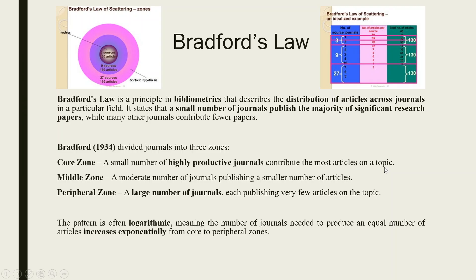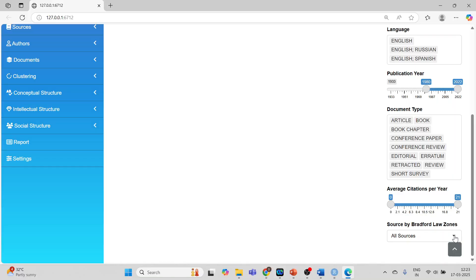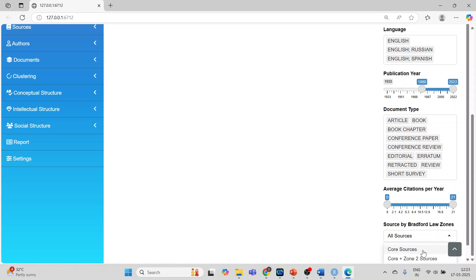So the core zone is a small number of highly productive journals contributing the most articles on a specific topic, like sustainability. The middle zone is a moderate number of journals publishing a smaller number of articles. The peripheral zone is a large number of journals each publishing very few articles. This pattern is often logarithmic — the number of journals needed to produce an equal number of articles increases exponentially from core to peripheral: 3, 9, 27 journals for 130, 130, 130 articles. In BiblioShiny, you can specify whether to run the bibliometric analysis on core sources or core plus zone 2 sources.